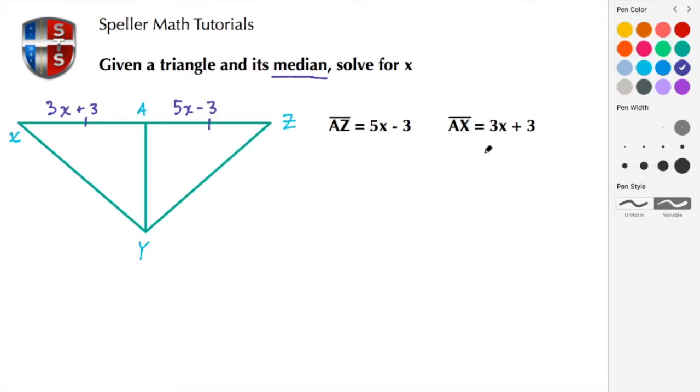So let's do that here. 5x minus 3 equals 3x plus 3. Let's get our x's to the left-hand side, so we're going to subtract 3x from both sides, leaving us with 2x minus 3 equals 3. Then we're going to add 3 to both sides to get rid of this negative 3 on the left, so we're left with 2x equals 6. And now to solve for x, we're going to divide both sides by 2, and here we see that x is 3.